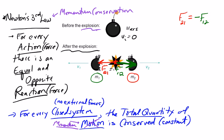Now, when we have an explosion or some kind of interaction, that explosion is going to happen for a set amount of time — and the time of the explosion is the same for both objects. So if the explosion took three milliseconds, it's three milliseconds for each object being pushed. So I'm going to multiply both sides by the time of the explosion, and the reason I do that is because the left side now becomes an impulse acting on object one.